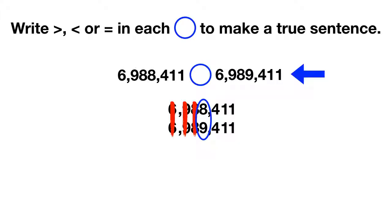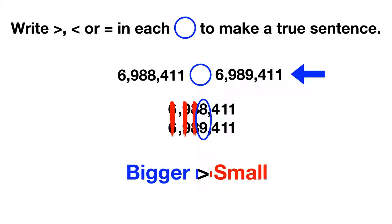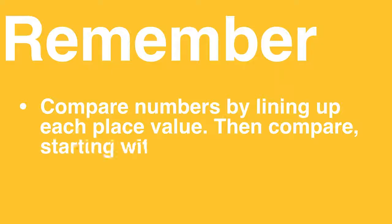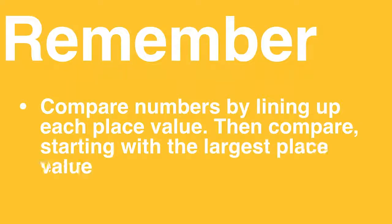Now one last time — your greater than or less than symbol: the big open side is bigger, the small pointy side is smaller. So to show that the second number is larger, draw your symbol like this. From today, remember: compare numbers by lining up each place value, then compare starting with the largest place value first.